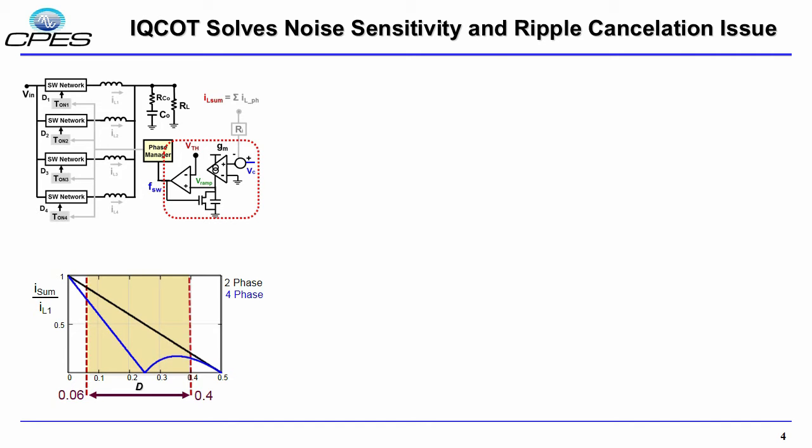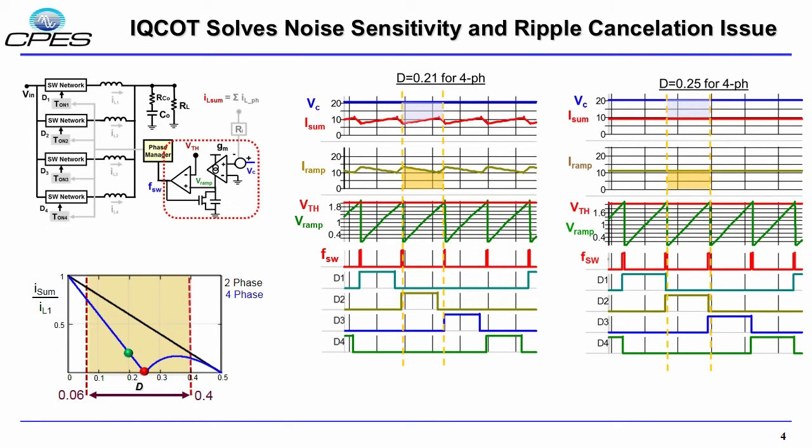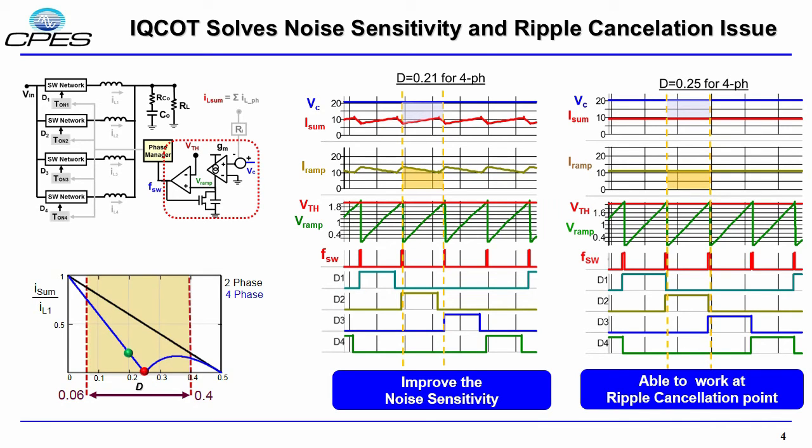In this page, we show how the proposed IQ-COT solves this noise sensitivity and ripple cancellation issue. So here we can see when D equals 0.21 for four-phase operation when the ripple is small, but still in the IRAMP, we have enough DC to charge the cap and to generate the duty cycle. And here when you increase the duty cycle more, the duty cycle 0.25 for four-phase, we can see that there is no ripple at all, but the DC of the IRAMP still generates the VRAMP to create the duty cycle. So we can say that the proposed IQ-COT control can improve the noise sensitivity when the ripple is small and also can operate at the ripple cancellation point where ripple is completely zero.